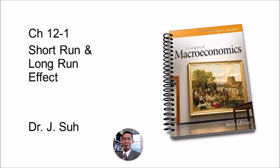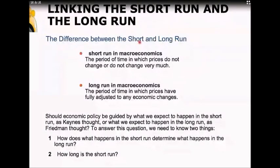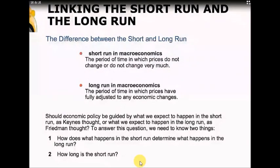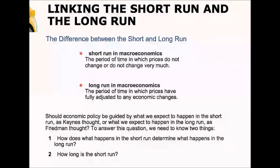Now that we have a model of the short run and the long run, we need to talk about the difference between the two and the transition from the short run to the long run. So remember, the short run in macroeconomics is the period of time in which prices don't change very much, and output was determined by demand, so movements of the aggregate demand curve affect output quite a bit and prices just a little bit.